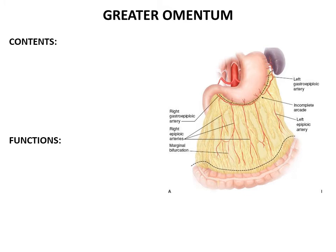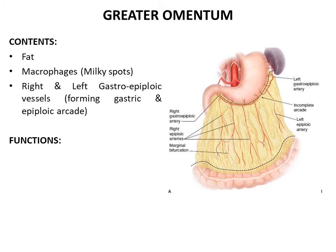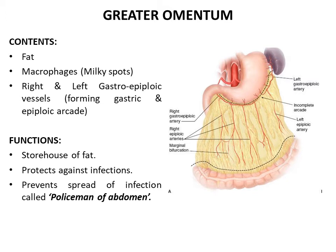The contents of the greater omentum are fat, macrophages which form milky spots, and right and left gastroepiploic vessels which form a gastric arcade in the upper part and an epiploic arcade in the lower part. The main functions of the greater omentum are: it is a storehouse of fat; it protects against infections using macrophages; and it prevents the spread of infection. The greater omentum has a tendency to reach the site of infection in the peritoneal cavity and plug it, hence it is called the 'policeman of the abdomen.' It is also used for preparing grafts during surgery due to its vascularity.